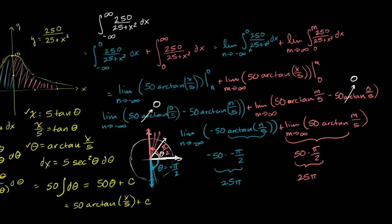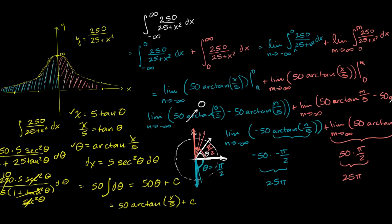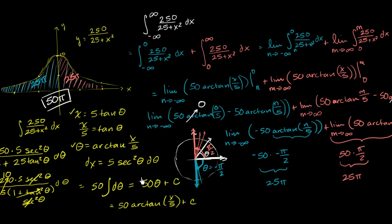So going back to our original problem, the area in blue is 25 pi and the area in orange is 25 pi. The total area under the curve — which is a pretty cool result — is 25 pi plus 25 pi, which equals 50 pi. And we're done.